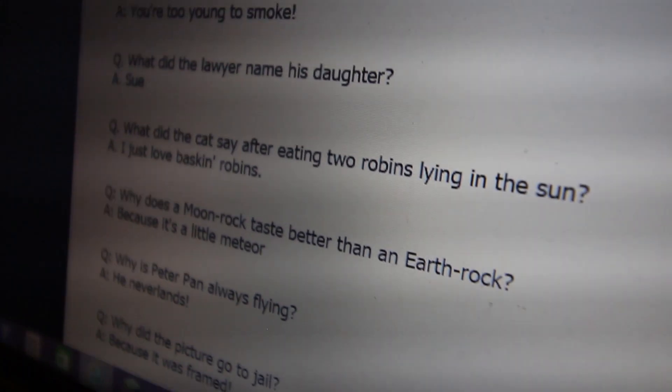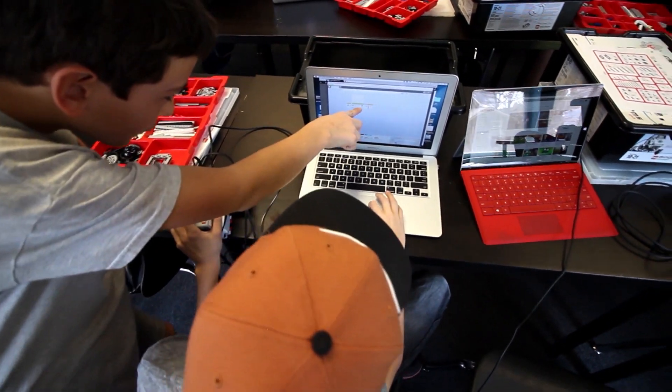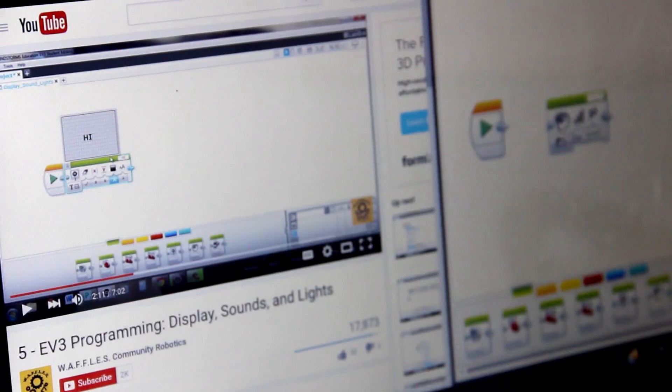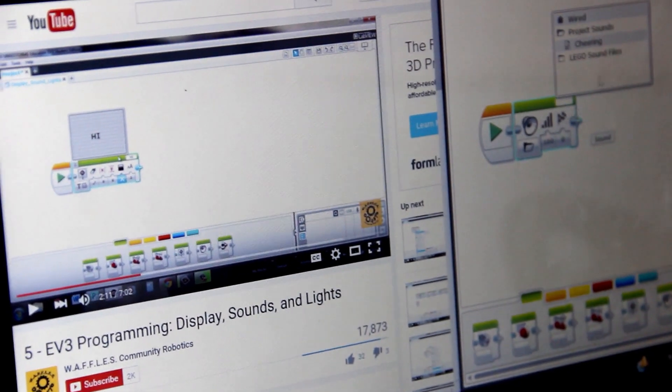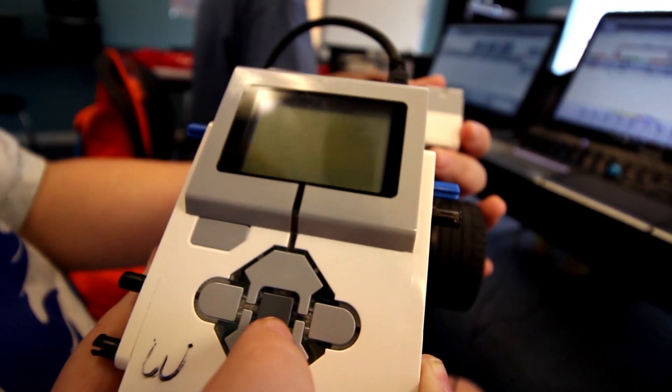This week about half the students are starting their second project where they program their robot to tell a story or joke. I want them to learn how they can use the touch sensors or buttons on the robot to trigger some type of action. That action will include telling some kind of joke or story, incorporating some sounds into it, and include manipulating some of the lights on the robot.